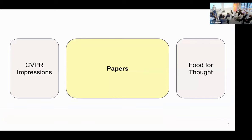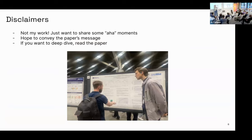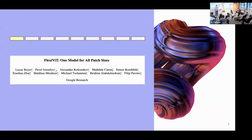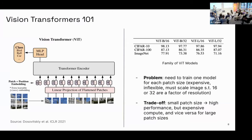Now to the papers — some disclaimers: this is not my work; I just want to share some aha moments and hopefully inspire you to read these papers yourselves. I'll summarize the key message and encourage you to dive deeper. The first paper is FlexiViT: One Model for All Patch Sizes, presented by Google. Most people here have heard of vision transformers, but it's important to revisit this key aspect of patching.